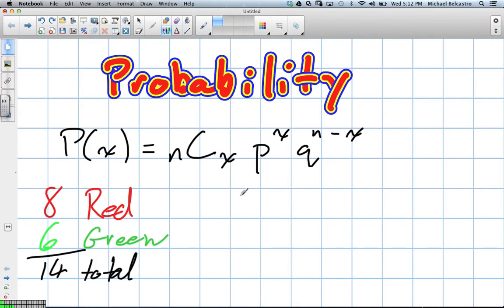So our first question, question A, asks us the probability of exactly three, the probability of exactly three being red.